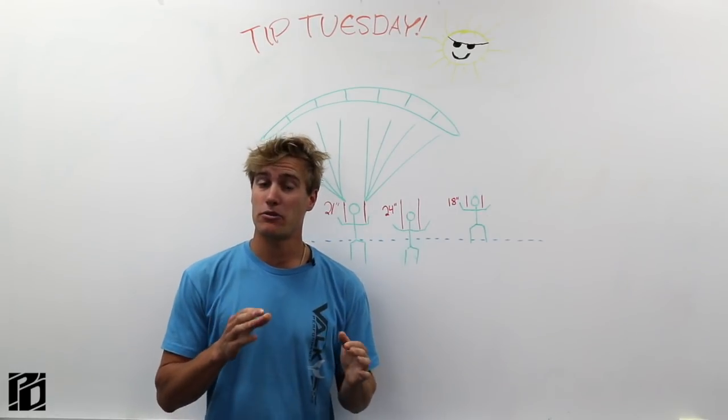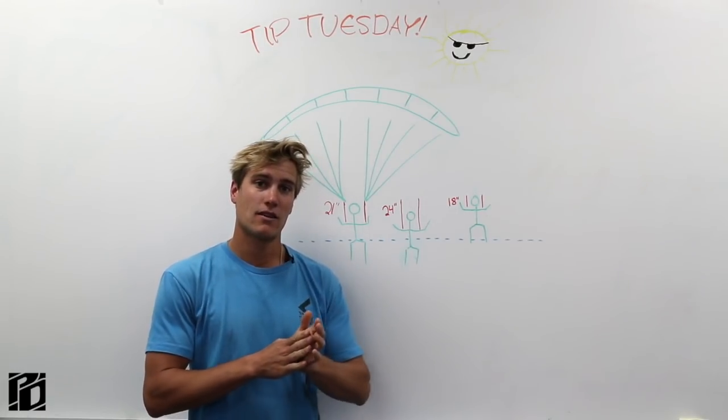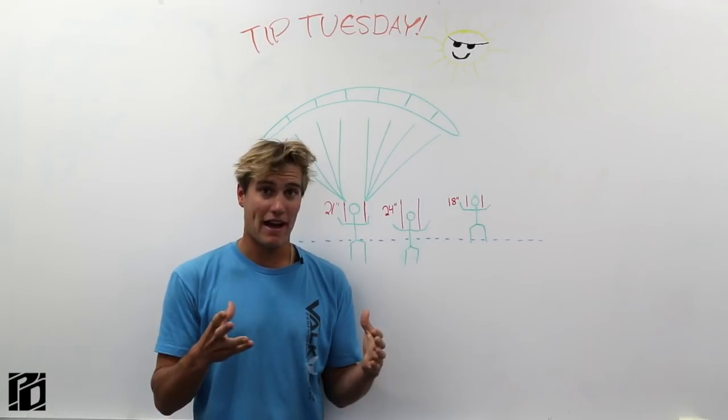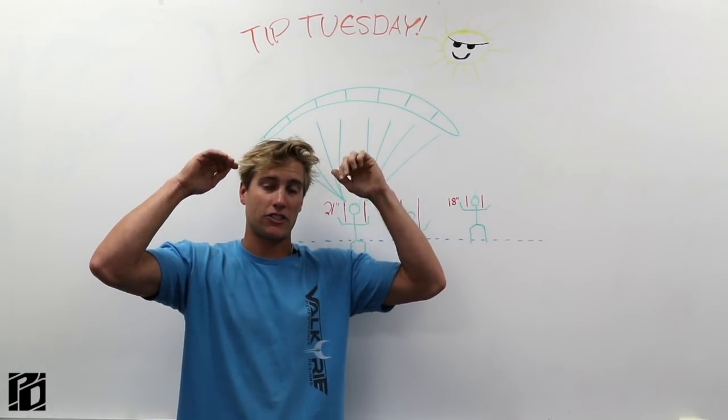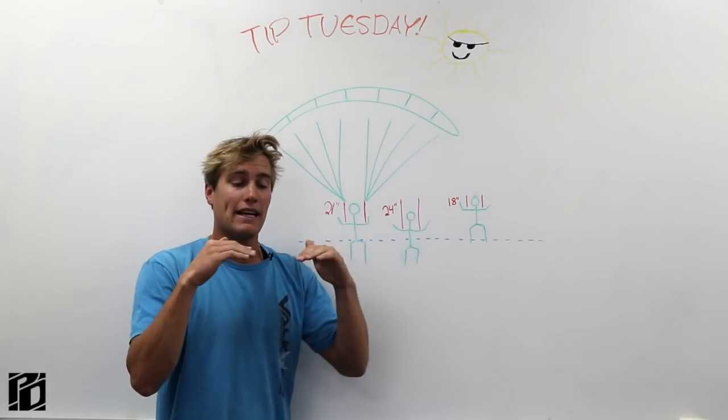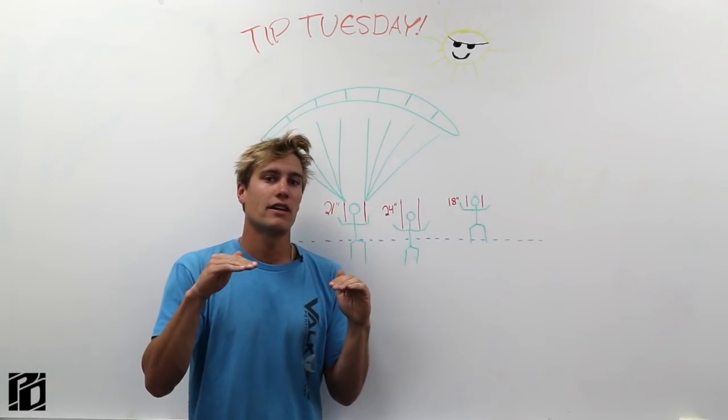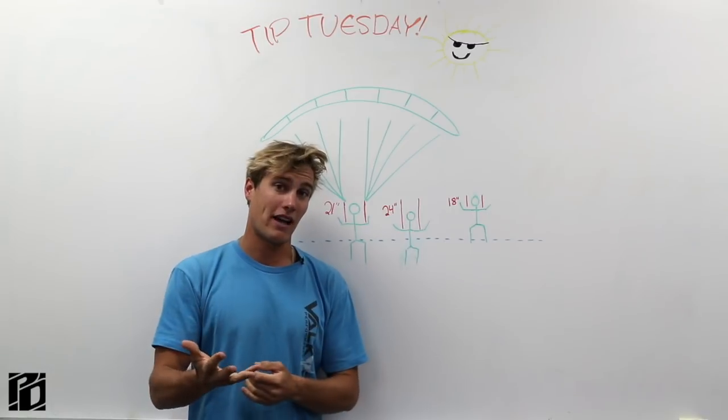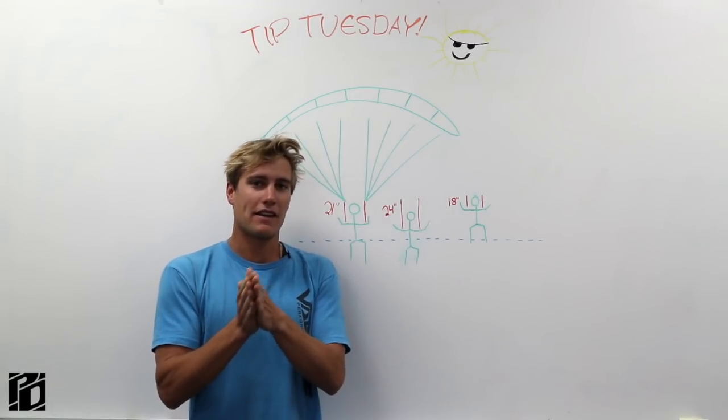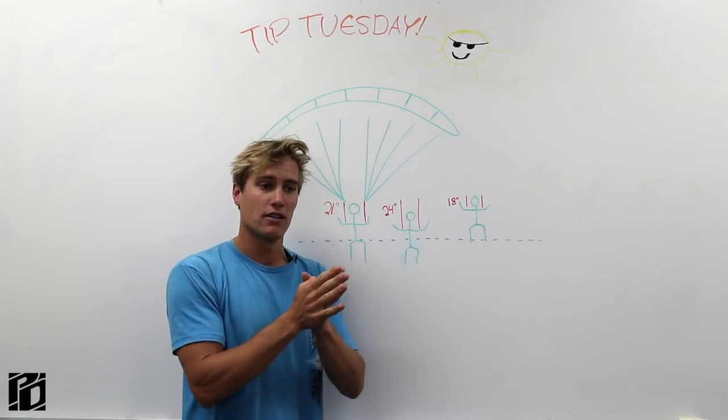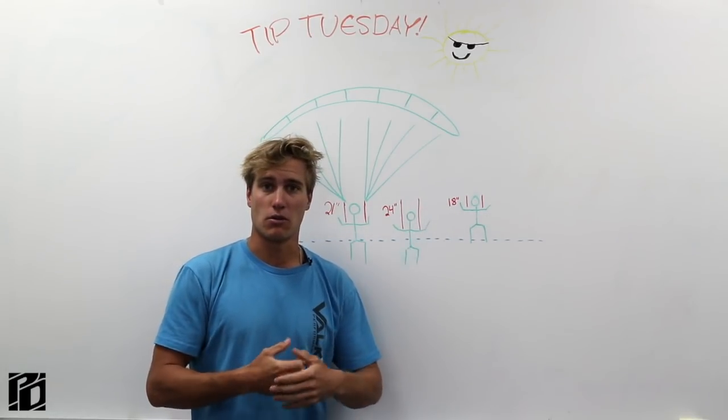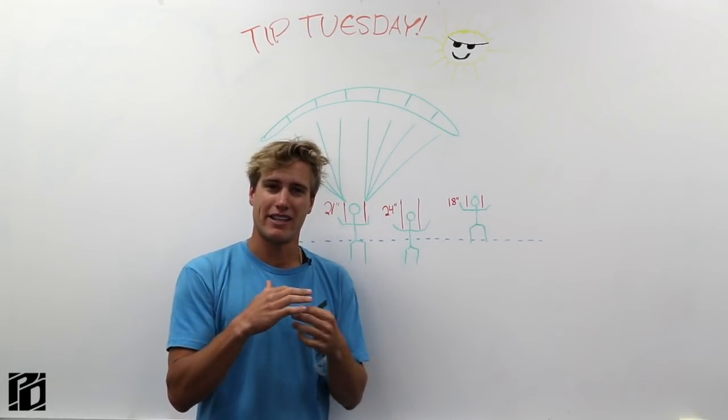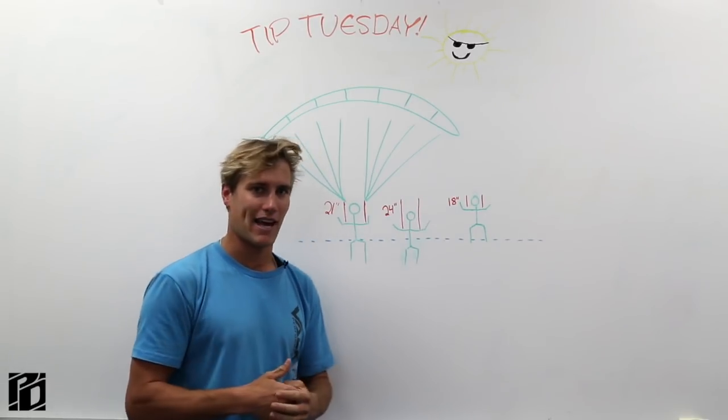However, something to keep in mind is if you decide to shorten your brake lines, you can, in fact, shorten them too far to where you're deflecting the tail of the parachute even when you're in full flight. So if you're in full flight and there is some tail deflection, that means that the parachute is not actually flying in full flight, and that would have an adverse effect on your flare regardless of where you're flaring to because you're flying, essentially, you're flaring from quarter brakes, something like that.